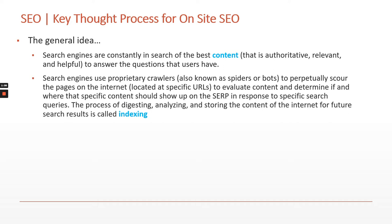These spiders are evaluating content across different dimensions to figure out how helpful, authoritative, and relevant that content is. As the spiders digest, analyze, and store that content, it becomes available to show for future search results when you or I look for things in Google search. That process of digesting, analyzing, and storing the content is when the search engines are indexing that content.